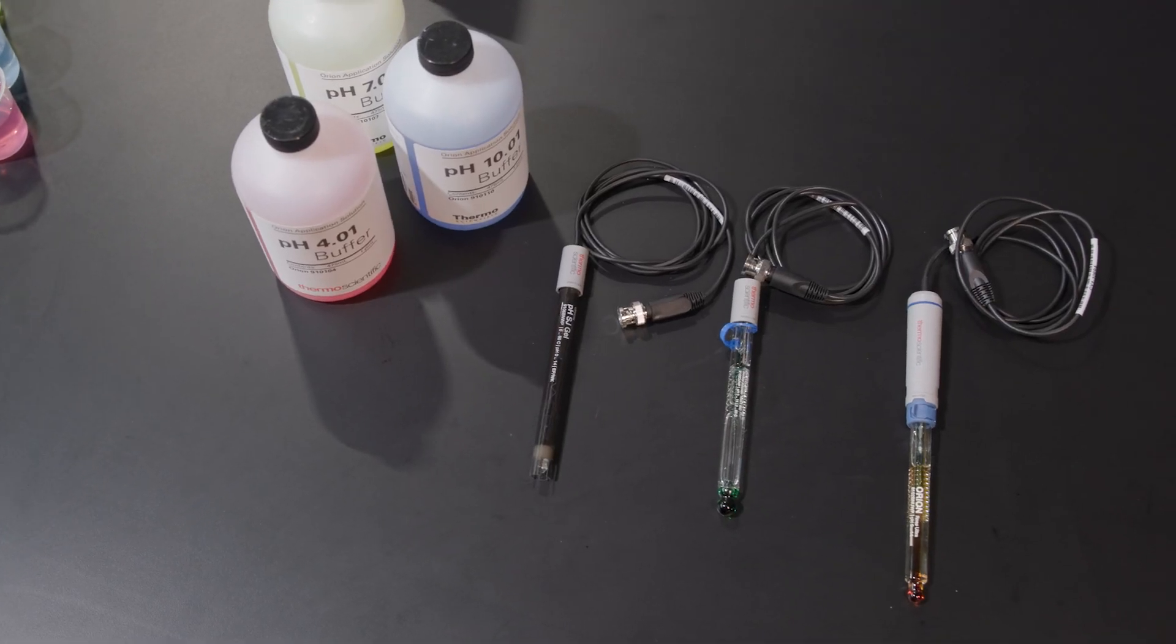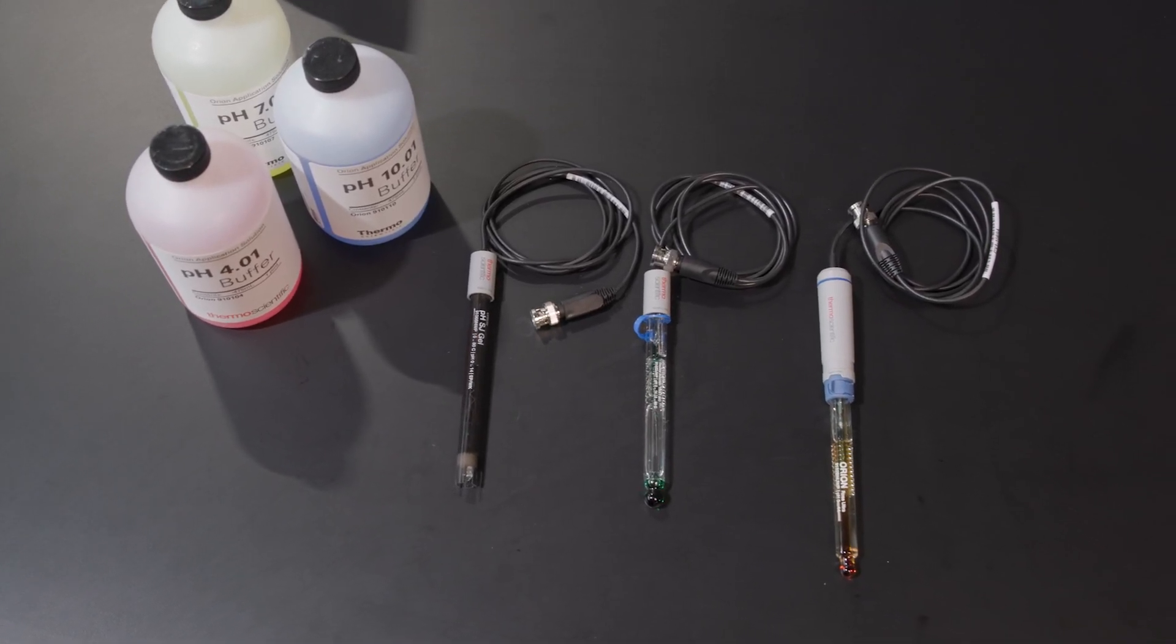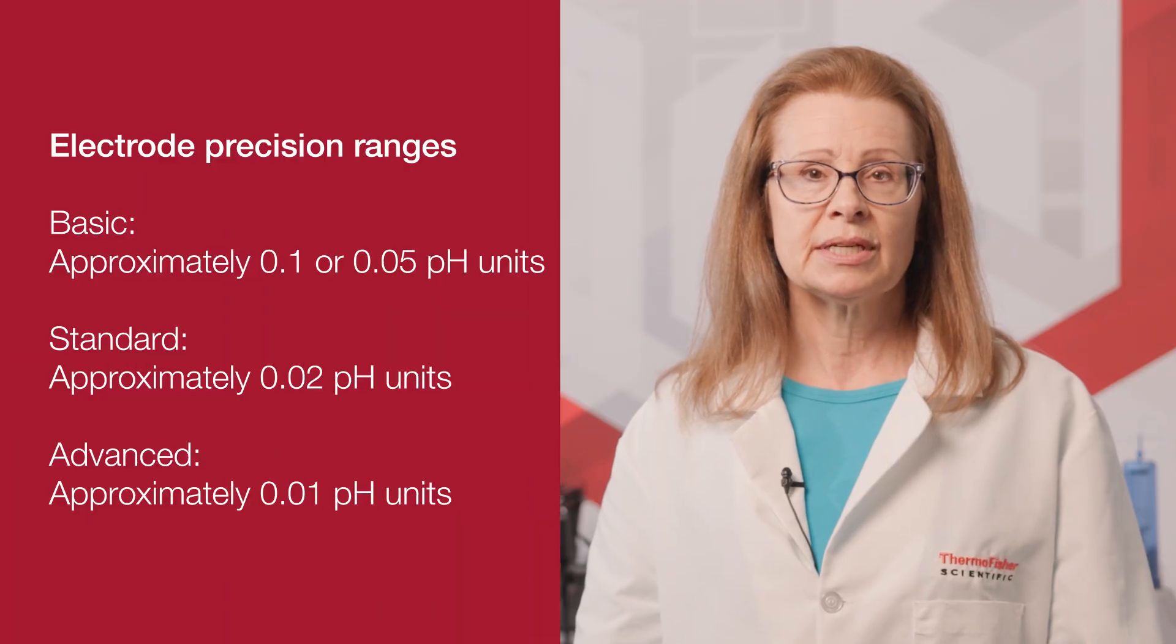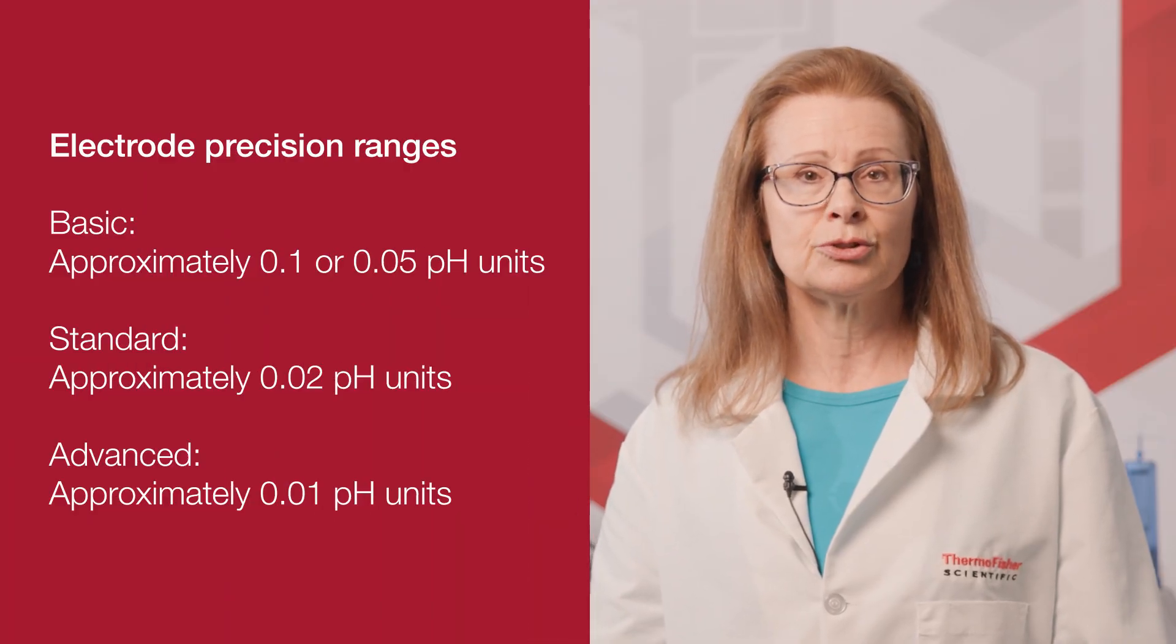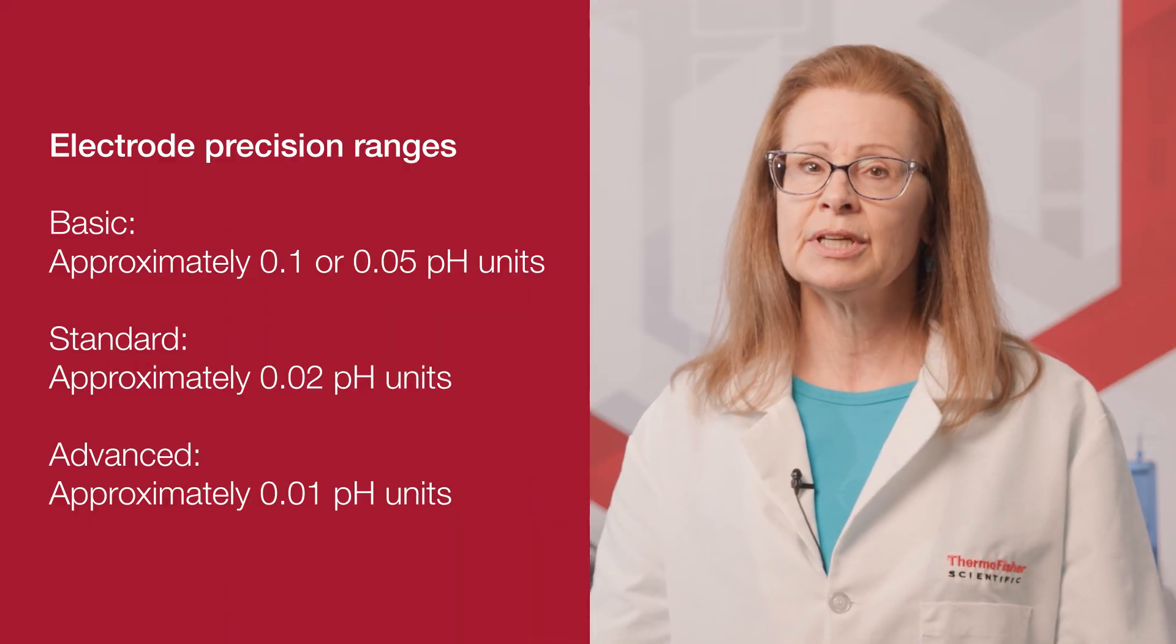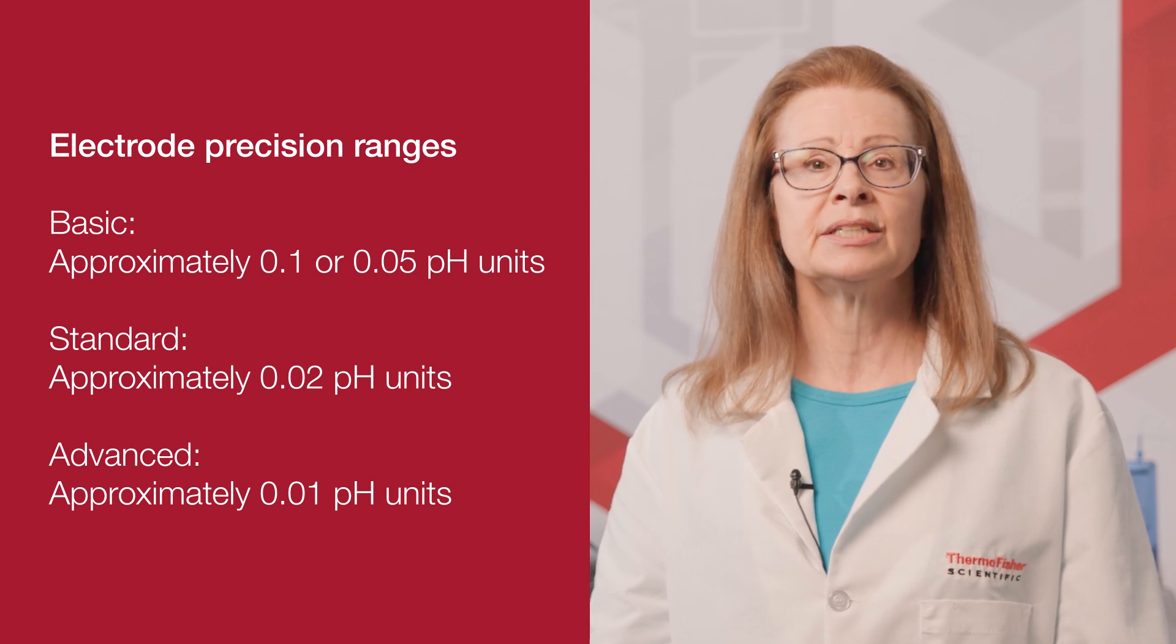Next, you should consider precision. The level of precision required for your readings is important. That's why most manufacturers offer a three-tiered system. Basic, standard, and advanced electrode options can achieve varying levels of precision under ideal conditions.